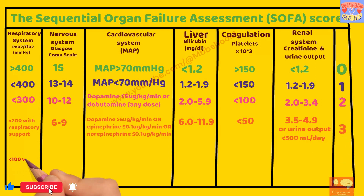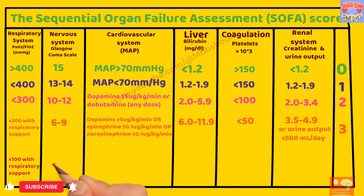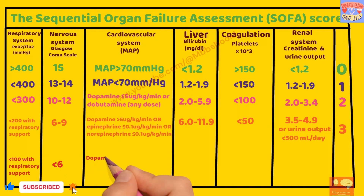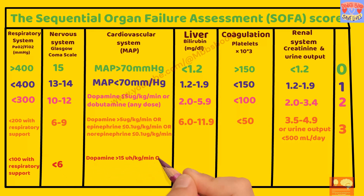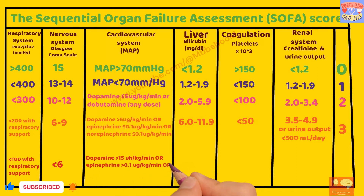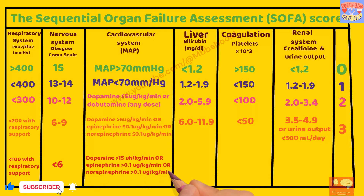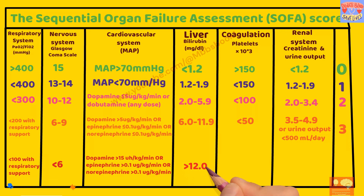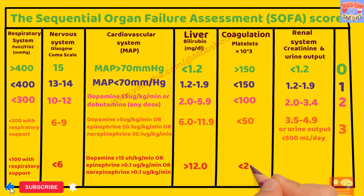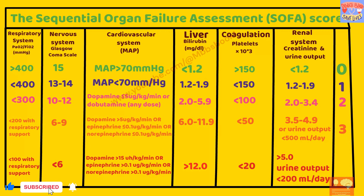If PF ratio is less than 100 with respiratory support, GCS score less than 6, dopamine more than 15 microgram per kg per minute, epinephrine more than 0.1 microgram per kg per minute, or norepinephrine more than 0.1 microgram per kg per minute, bilirubin more than 12, platelet count less than 20,000, and creatinine more than 5 with urine output less than 200 ml per day, then SOFA score will be 4. This table is all about the SOFA score.